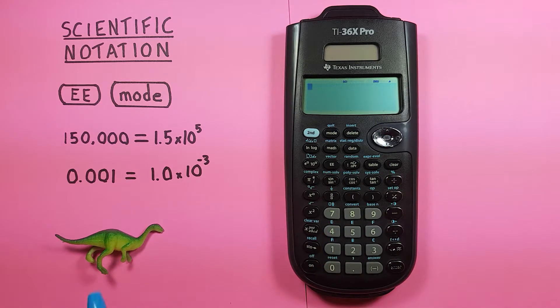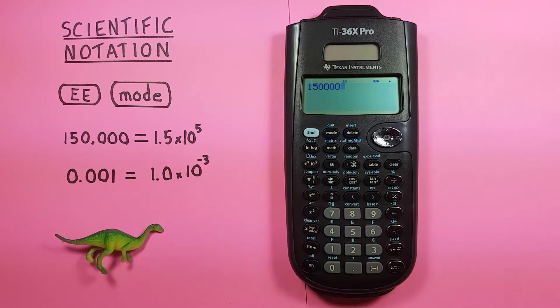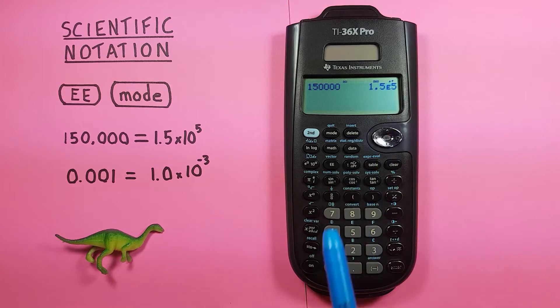So now if we enter, let's say, our 150,000, just enter it normally. There we go, 150,000, press enter. You can see it automatically converts to 1.5 times 10 to the power of 5.